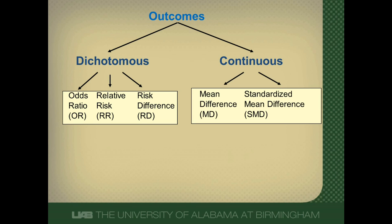Now, continuous outcomes can be summarized in one of two ways. Let's first focus on the mean difference. So if the outcome measure is the same in each study, and it's measured the same exact way, the results can be averaged and we can calculate a mean difference. It measures the absolute difference between the mean value in the two groups in the clinical trial, and it estimates the amount by which the experimental intervention changes the outcome on average compared with the control group.